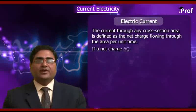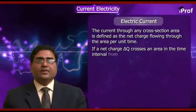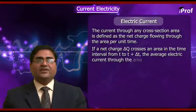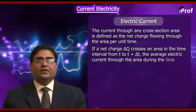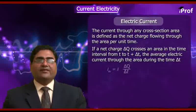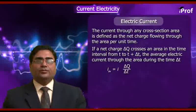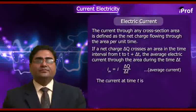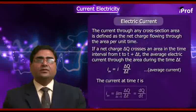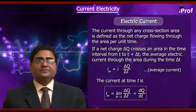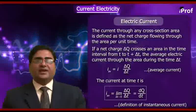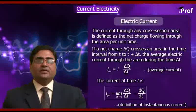If a net charge delta Q crosses an area in the time interval from T to T plus delta T, the average electric current through the area during the time delta T is: I average = delta Q upon delta T. The instantaneous current at time T is I equal to the limit as delta T tends to 0 of delta Q upon delta T, equal to DQ upon DT. This is the definition of instantaneous current.